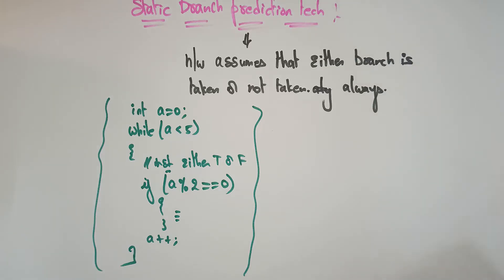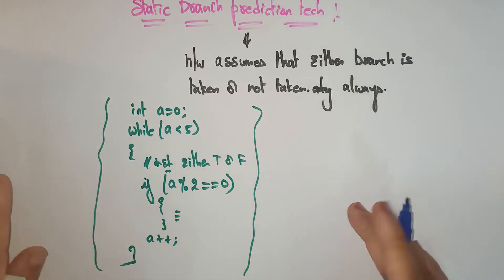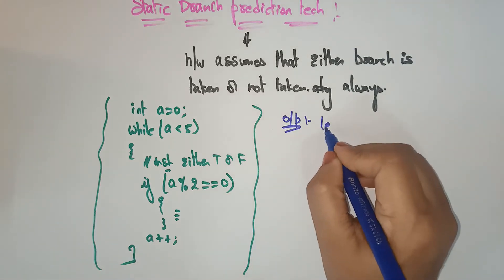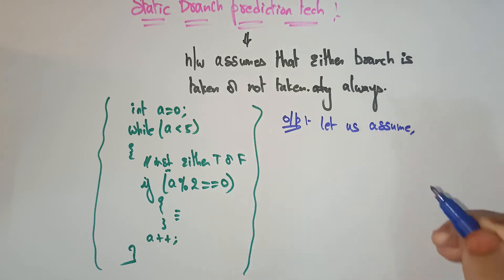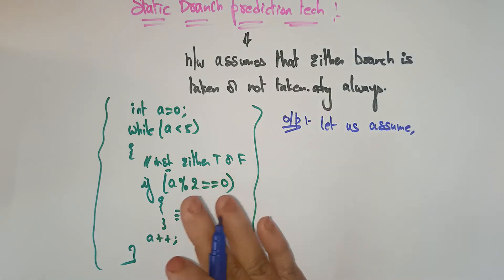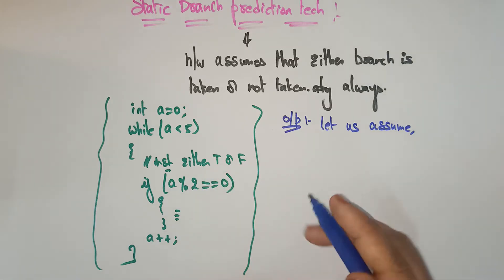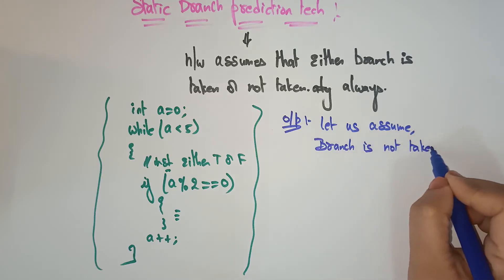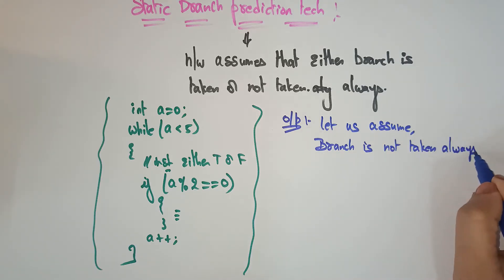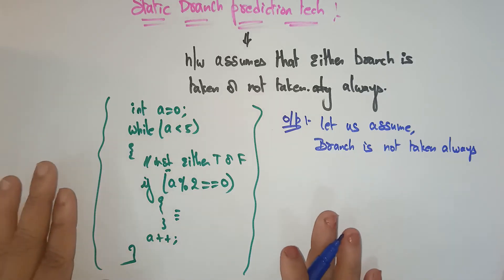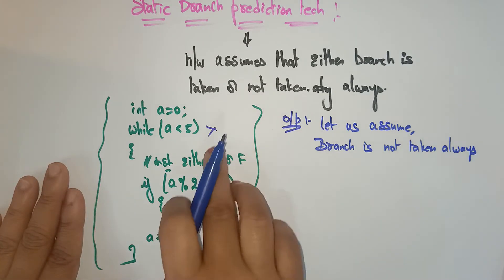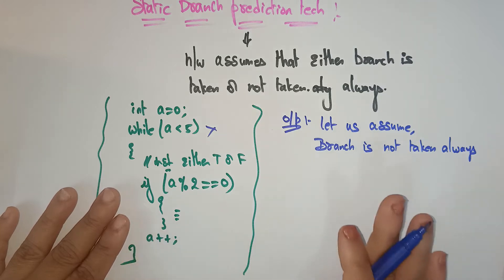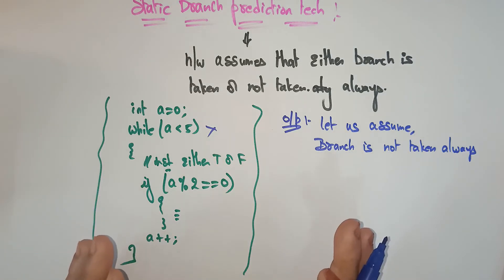I am talking about branch taken or branch not taken — what does it mean? Let's assume the underlying hardware has assumed that branch is not taken — not taken, always. Branch is not taken means this condition at 'int a = 0' — the branch is not entering there. It is not taking anything.